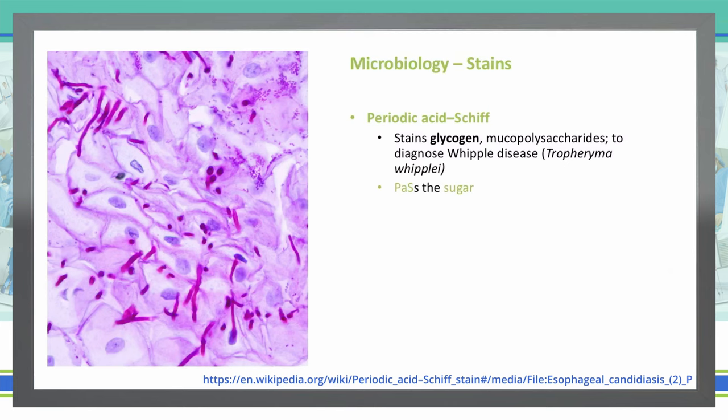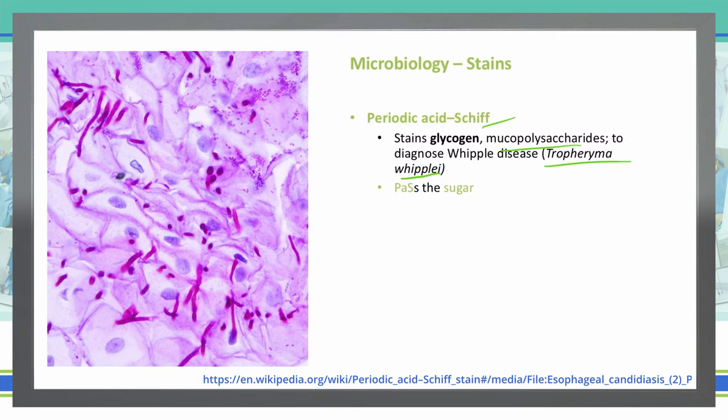Another stain is the periodic acid-Schiff (PAS) stain. It works by oxidizing sugars within the bacteria, breaking bonds between two carbon bonds, then reacting with the Schiff agent to give a purple or magenta color. We're staining glycogen and mucopolysaccharides, which helps us diagnose things like Whipple's disease (Tropheryma whipplei). The mnemonic is 'pass the sugar' — PAS stains sugar. The photo shown is esophageal candidiasis stained with PAS.